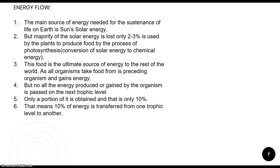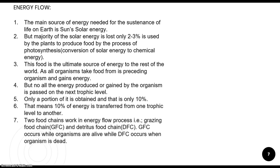The 10% law means: if 100 kilojoules of energy is produced by plants, then only 10% — that is 10 kilojoules — is transferred to the herbivores. When a carnivore eats a herbivore, only 10% of that 10 kilojoules, which is 1 kilojoule, is transferred to the carnivore. This is the main point of energy flow.